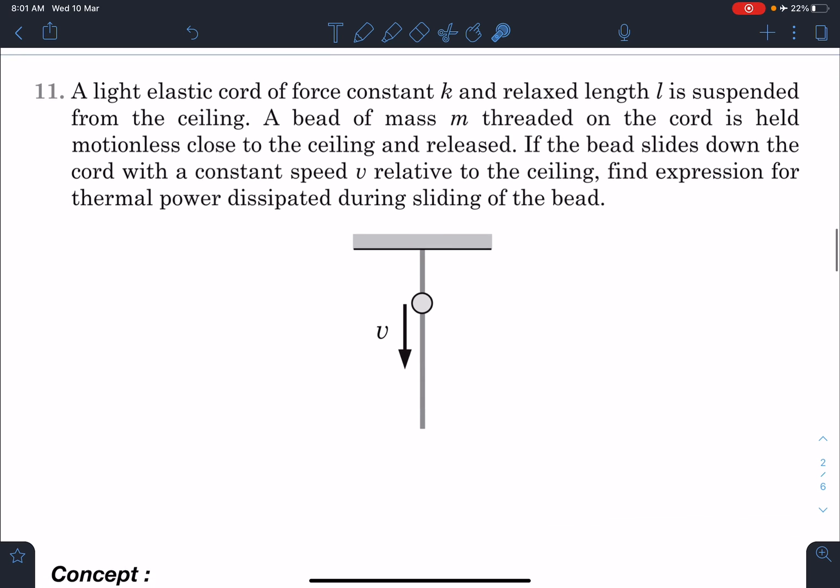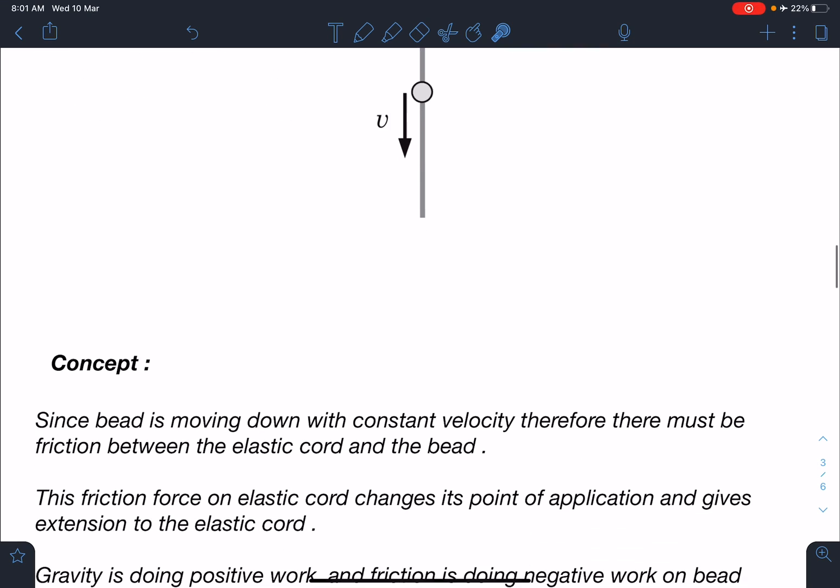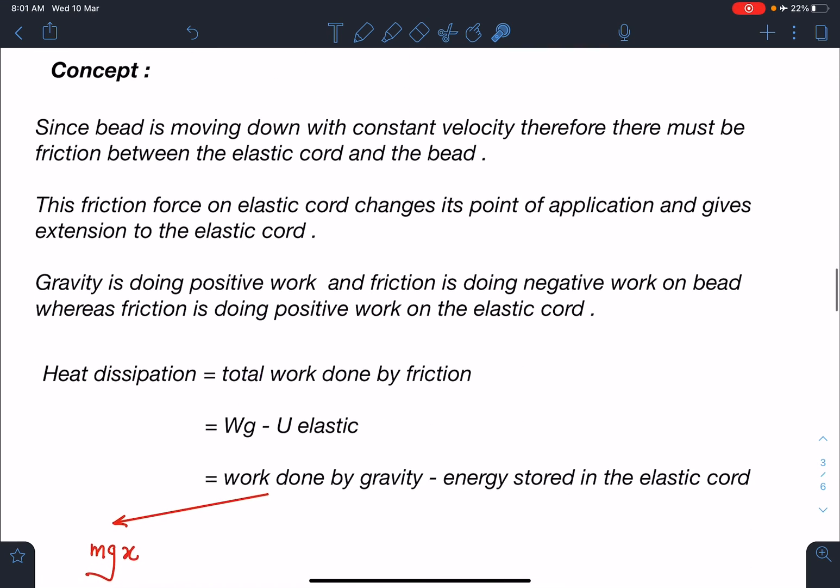Here is this problem from Pathfinder: A light elastic cord of force constant k and relaxed length l is suspended from ceiling. A bead of mass m threaded on cord is held motionless close to the ceiling and released. If the bead slides around the cord with constant speed v relative to the ceiling, find the expression of thermal power dissipated during sliding. It's a very challenging problem, at least I found it quite challenging.